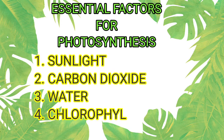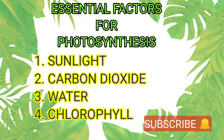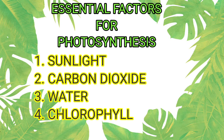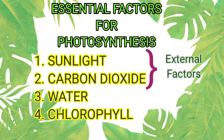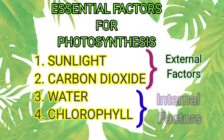Among these four essential factors, sunlight is obtained from the sun and plants get carbon dioxide from the atmosphere. That is why these two are considered as external factors. Water is obtained from underground and chlorophyll is present in chloroplasts — that is why these two are considered as internal factors.